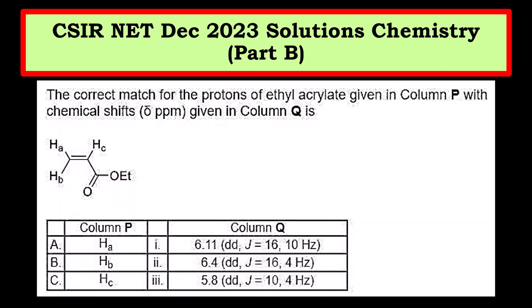Here a compound is given. What we have to do is a correct match for the protons of ethyl acrylate given in column P. In column P, the protons are given H_A, H_B and H_C. We have to match it with the correct value of the chemical shifts in PPM in column Q. These values are chemical shift values.